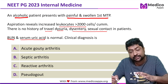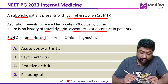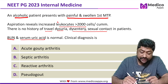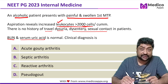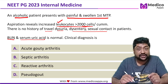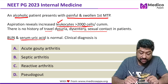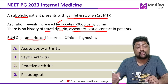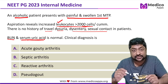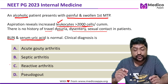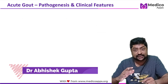This question becomes very interesting because of two things. In the aspiration, only leukocyte levels are increased. There are no uric acid crystals, and even the serum uric acid is normal. We are going to see what the correct diagnosis will be in this case.